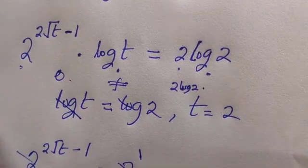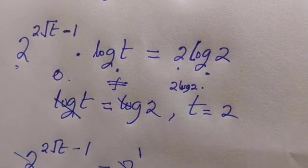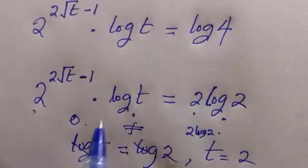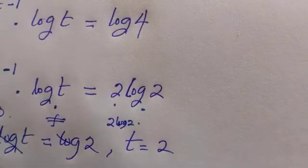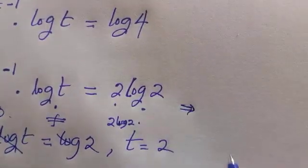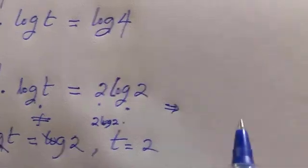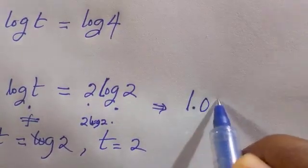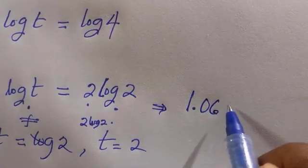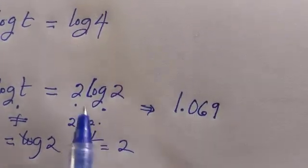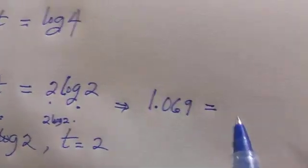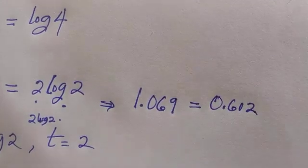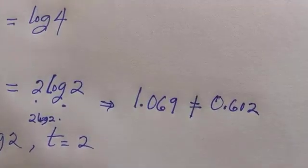By trying to plug in t equals 2, what you are going to get as the approximate value is for the left hand side we have 1.069, while the right hand side which is 2 log 2 is going to give us something around 0.60. And we see that these two also are not equal.